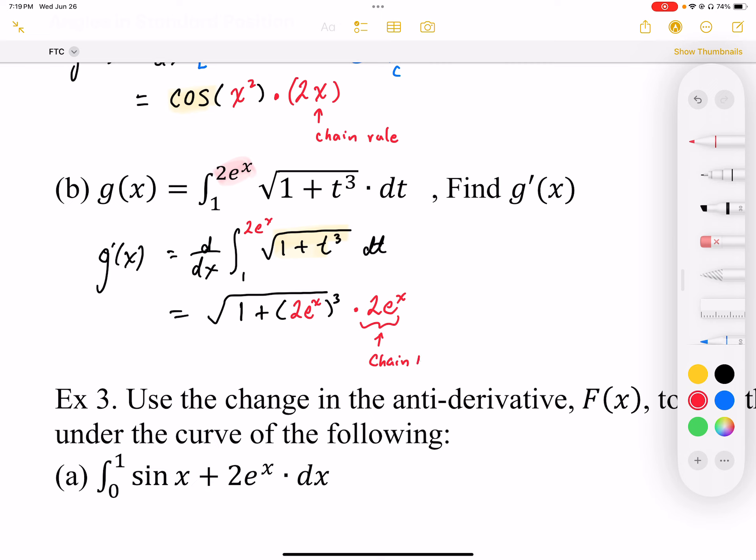So I can see my fundamental theorem of calculus showing up as my original function. And my original function, square root 1 plus t cubed, shows up again here. Now the end bound has to be embedded, and because it's embedded we apply chain rule. So this is a further application of the fundamental theorem of calculus.